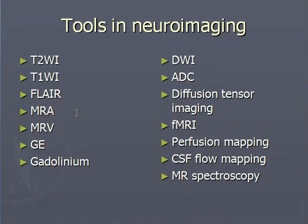Now these are the various imaging tools which can be used in neuroimaging: T1 weighted images, T2 weighted images, FLAIR, MR angiography, MR venography, gradient images, and post-contrast with gadolinium. DW images, ADC, diffusion tensor images, fMRI — these are the various names for the various sequences which are utilized in MRI. Also CSF flow mapping and MR spectroscopy.